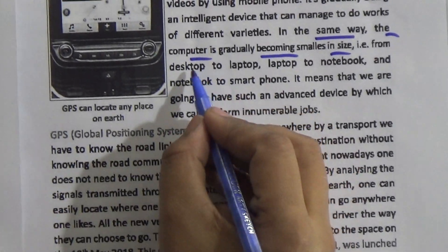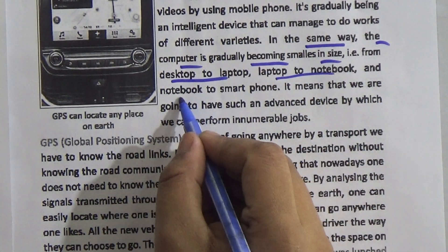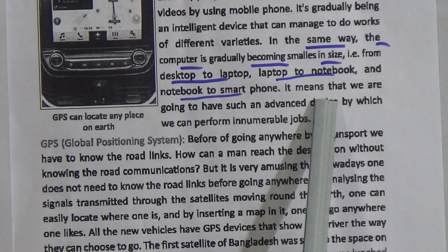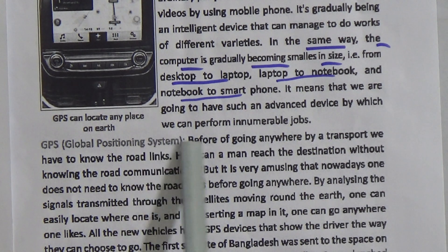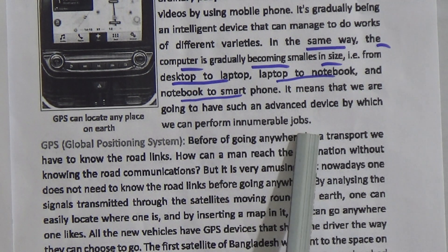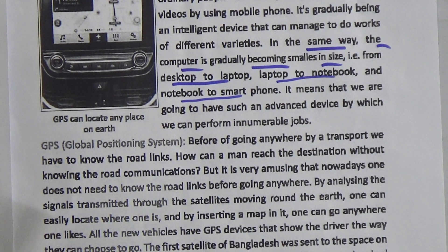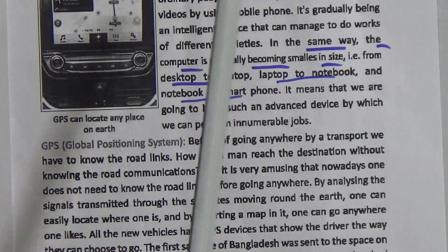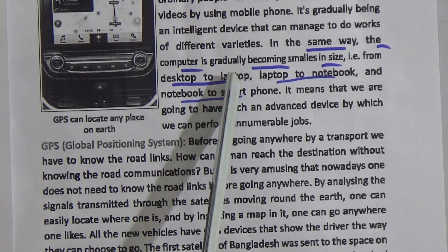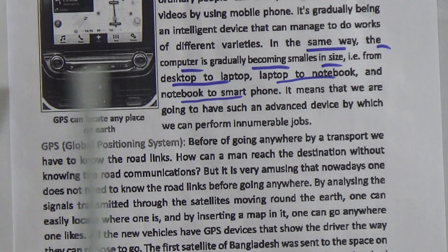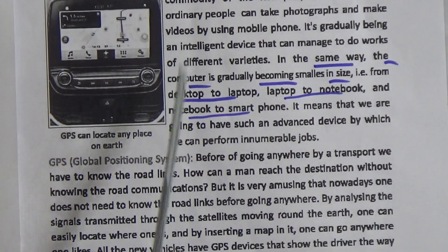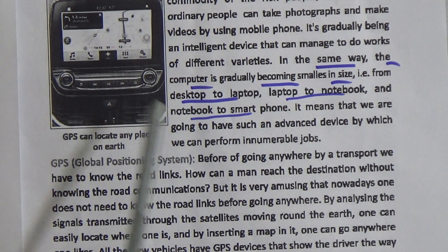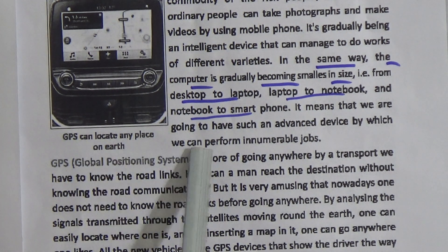For example, from desktop to laptop, laptop to notebook, and notebook to smartphone. This means we are going to have such an advanced device by which we can perform innumerable jobs. Entertainment is now very easy through the use of high-tech systems. Here is a picture — this is a GPS. By using GPS, anyone can locate any place on Earth.